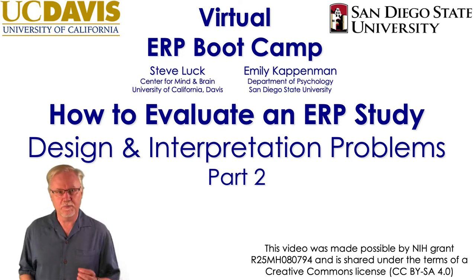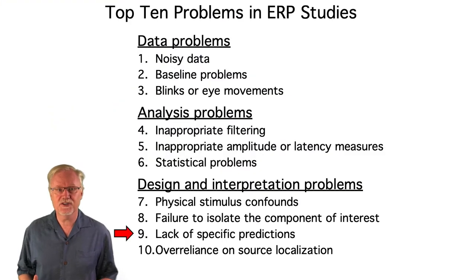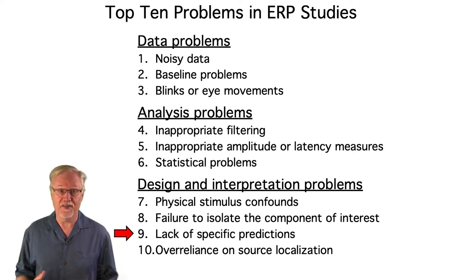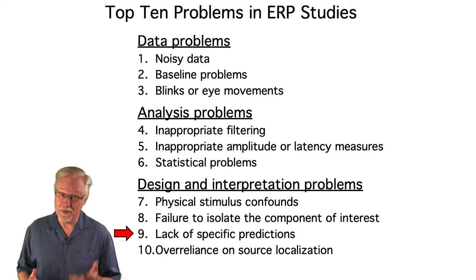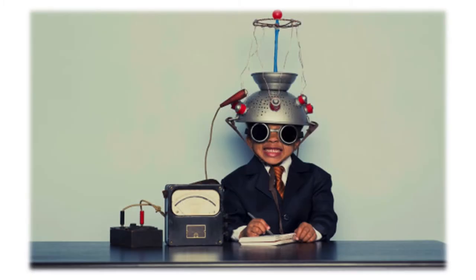Now we're going to move on to some problems with how a study is framed in a journal article. The first problem is quite simple. If the introduction of an ERP paper doesn't include a concrete description of what patterns of ERP results would be predicted by the hypotheses being tested, then that's a big warning sign. A lot of ERP studies just involve taking a previous behavioral paradigm and having subjects perform the task while EEG is recorded.